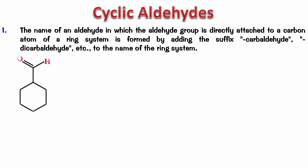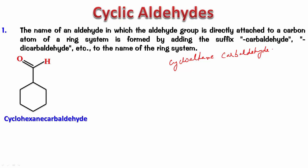So what would you name this? Pause and name it, then play it back. As I said, we are going to name it as cycloalkane carbaldehyde. Using that logic, this is going to become cyclohexane carbaldehyde — remember, I keep the E of hexane because this is starting with the consonant C.